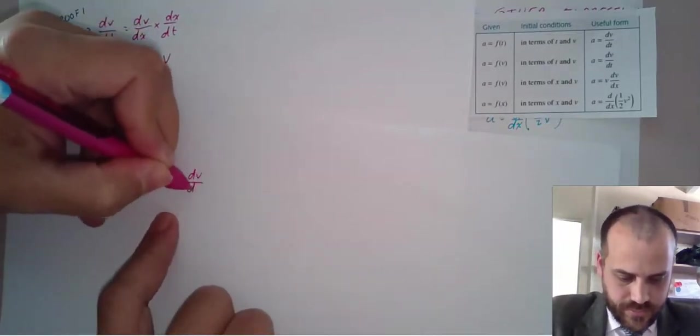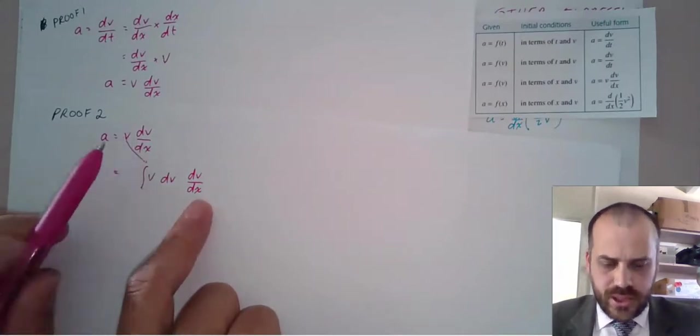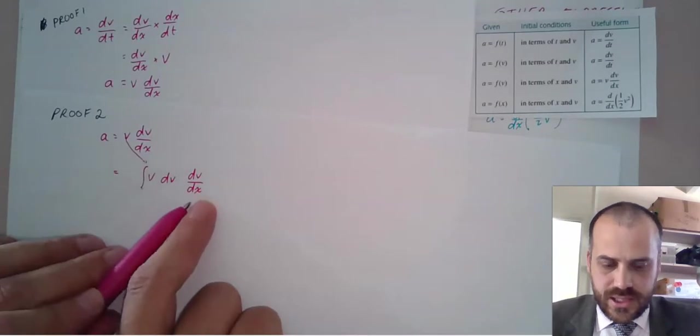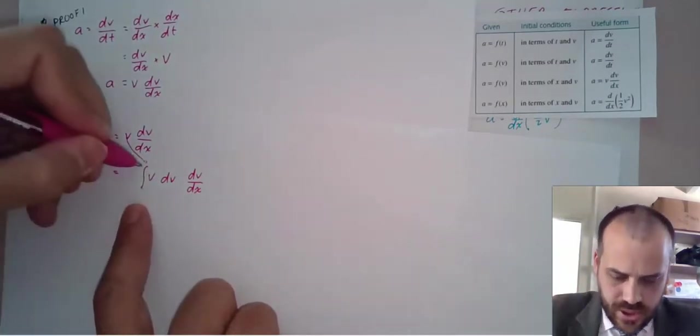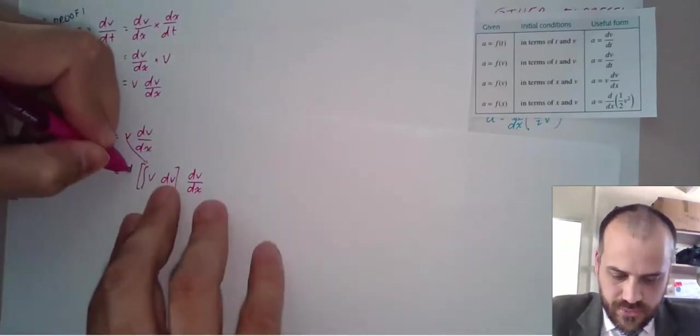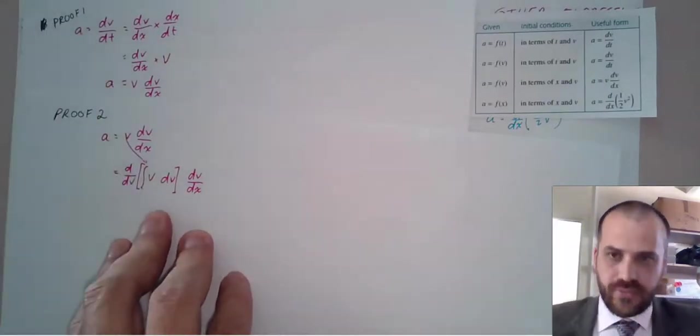And you might be saying to yourself, that's not equal. Like, the integral of V, DV, DV, DX is not the same as this. But I'm not finished. Once I've integrated it, I'm going to find the derivative of it with respect to velocity.